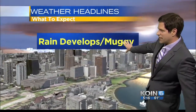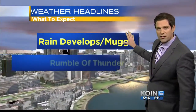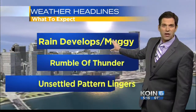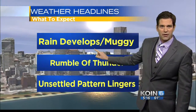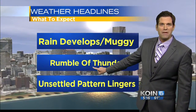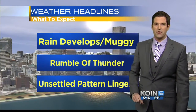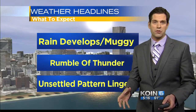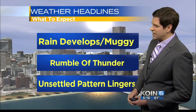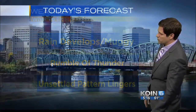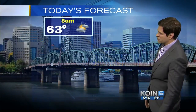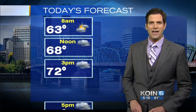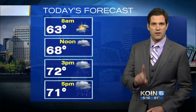Here are the headlines for today. We are going to start to see the rain developing in the North Valley as the day goes on. If you live south, you're going to see it a little bit earlier. Some of us may get a rumble of thunder, especially out towards the south and in the higher terrain towards the mountains. Our unsettled pattern is going to linger through the weekend, but then we start to see some changes coming in by next week.